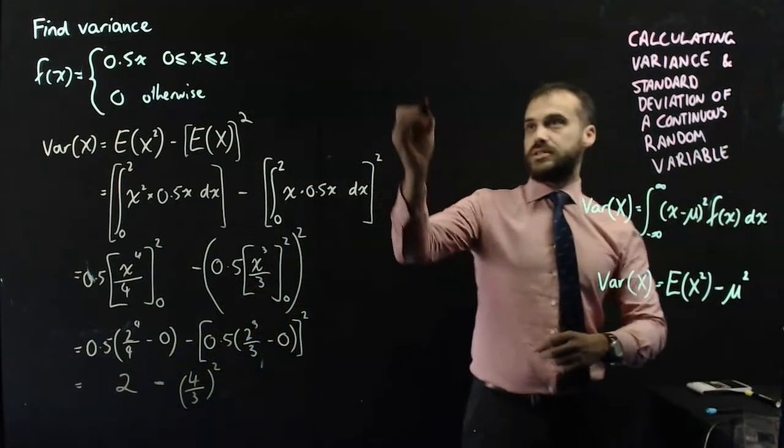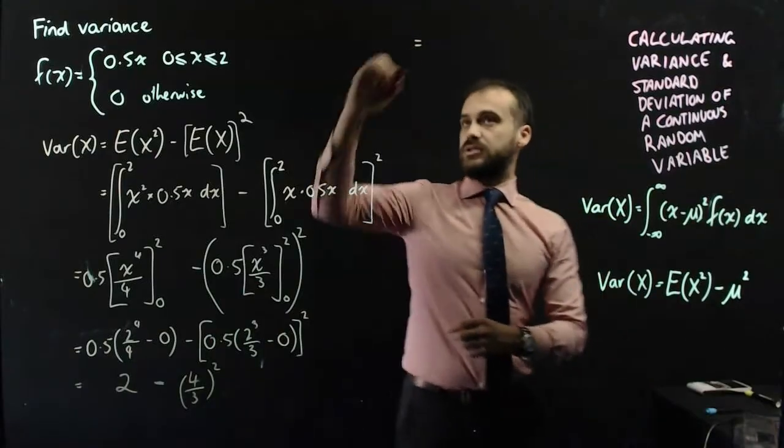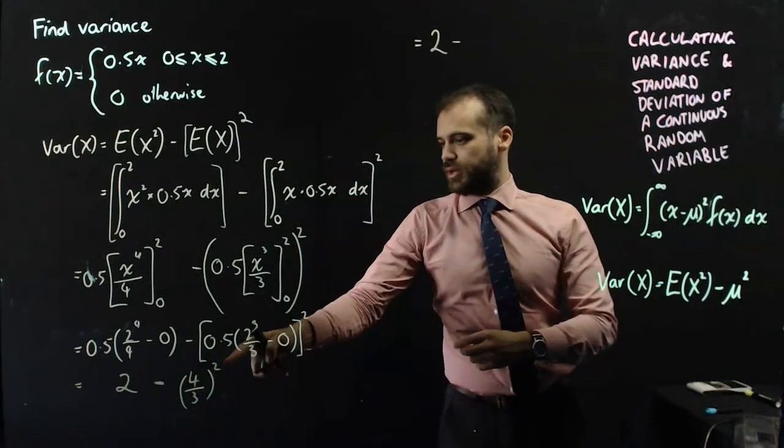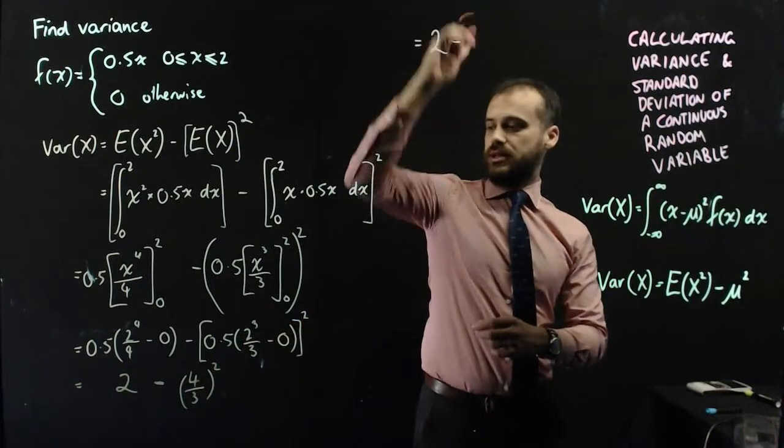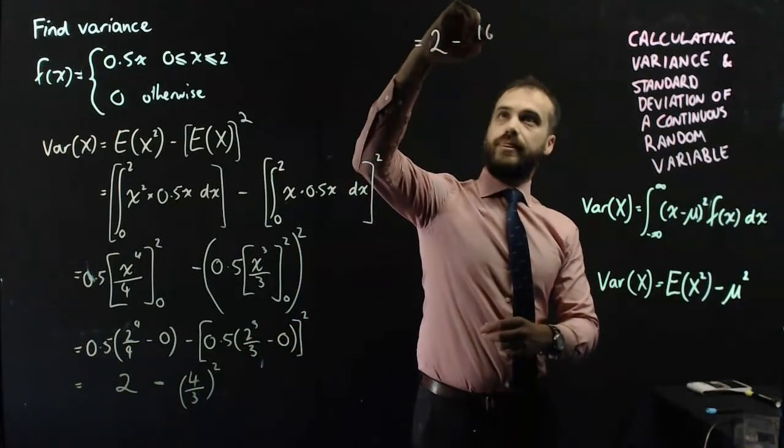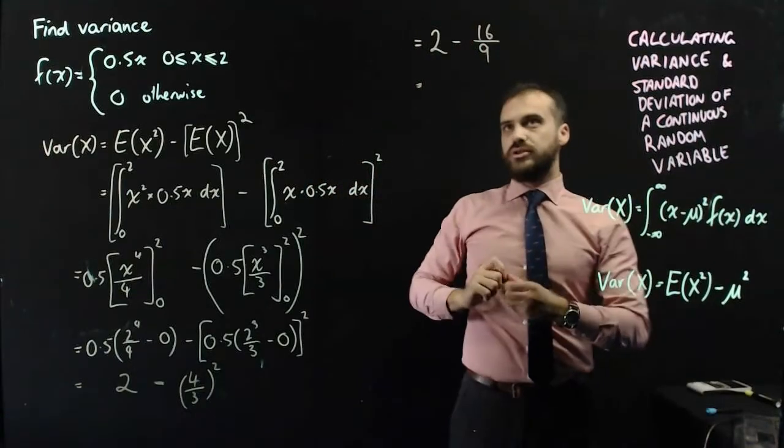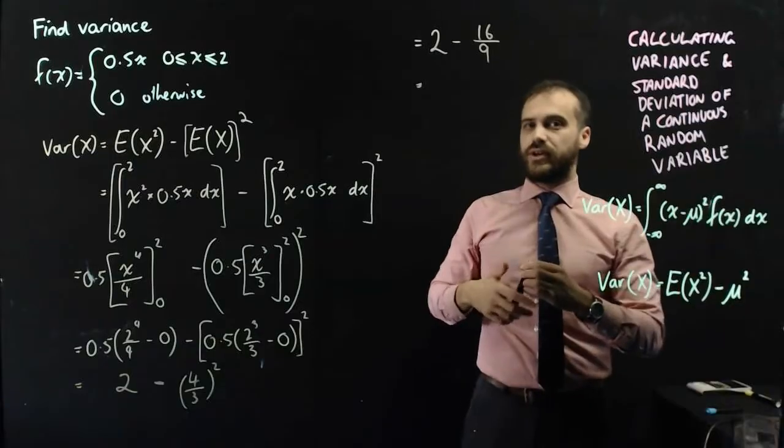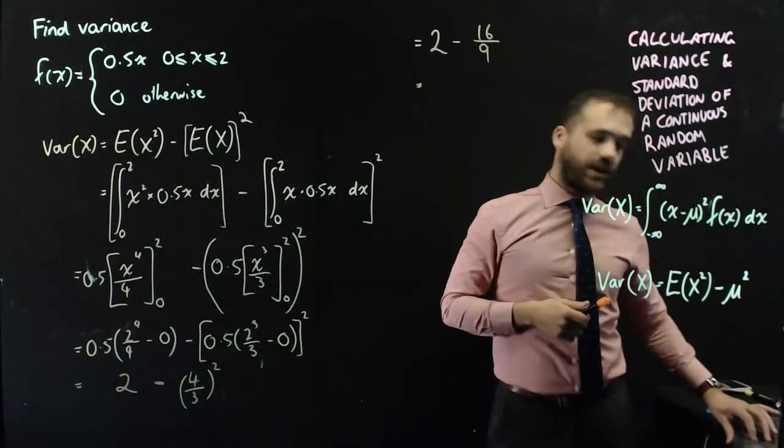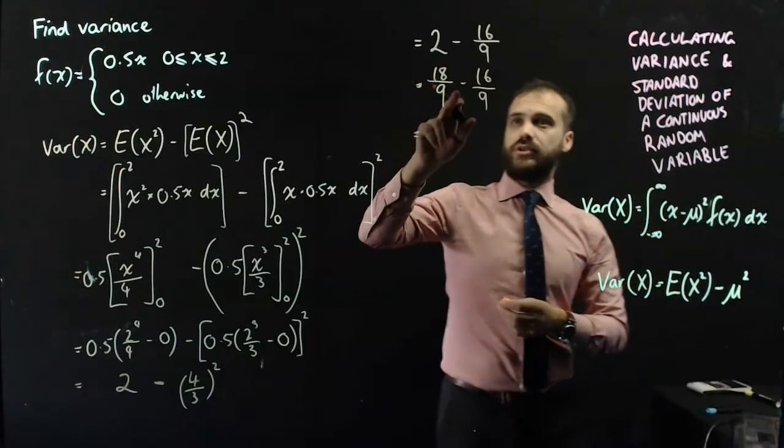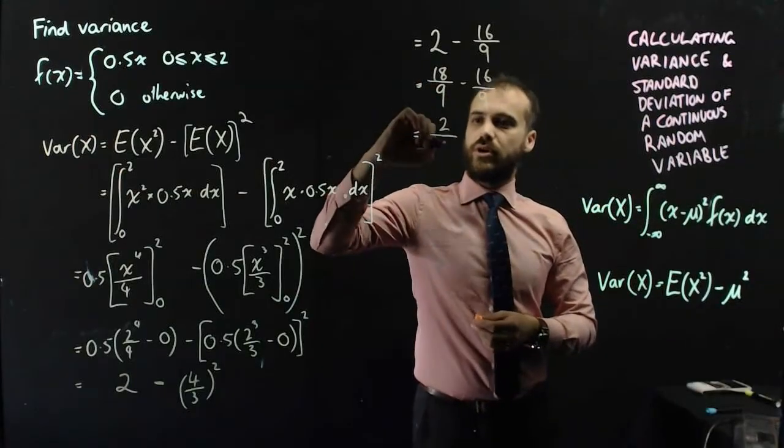So, now I have 2 minus 4 over 3 squared. I'm just going to finish this over here. So, that's equal to 2 minus 4 squared over 3 squared, which is 16 over 9. So, 2 minus 16 over 9. I'll just do a little bit of fraction stuff. 2 is the same as 18 over 9. 18 over 9 minus 16 over 9 is 2 over 9.